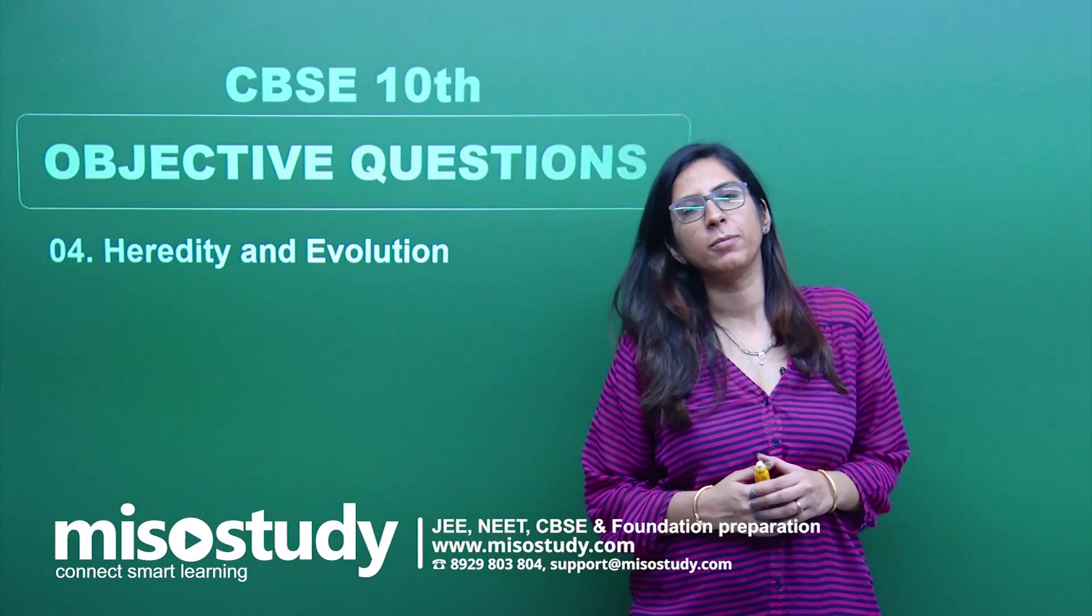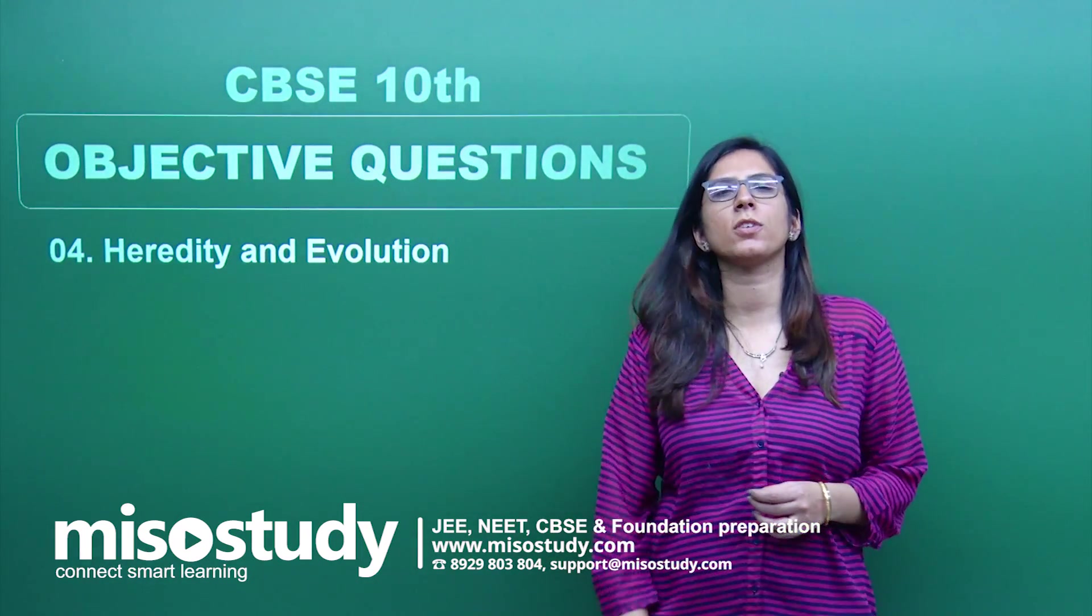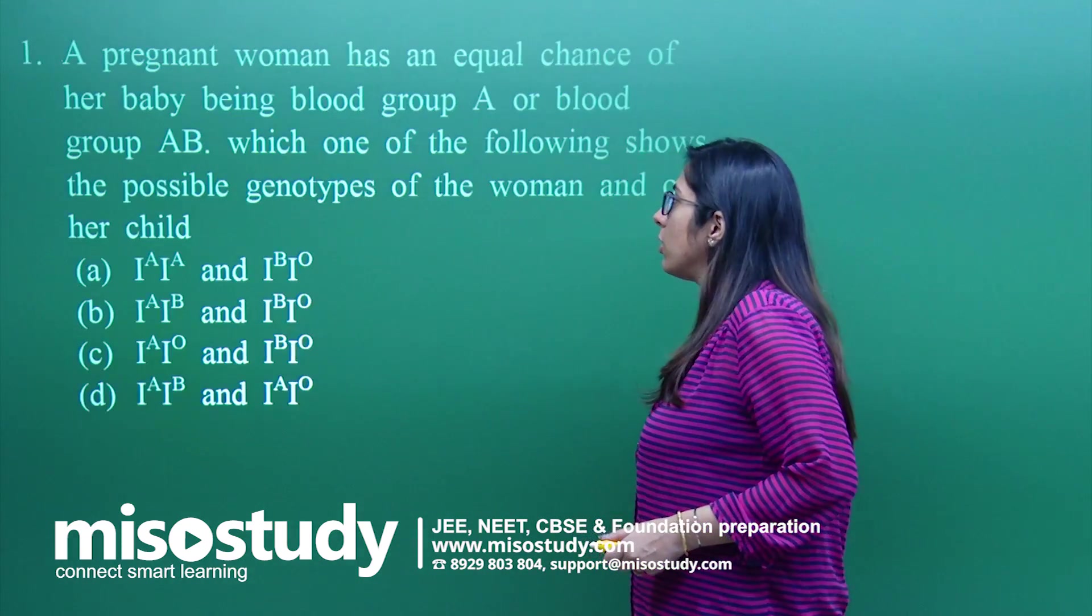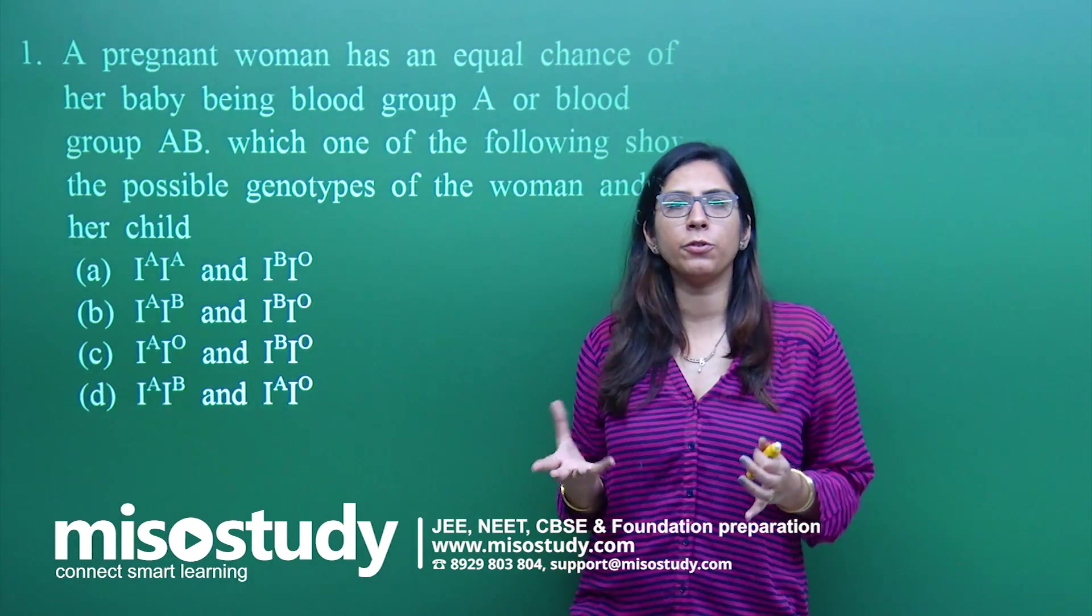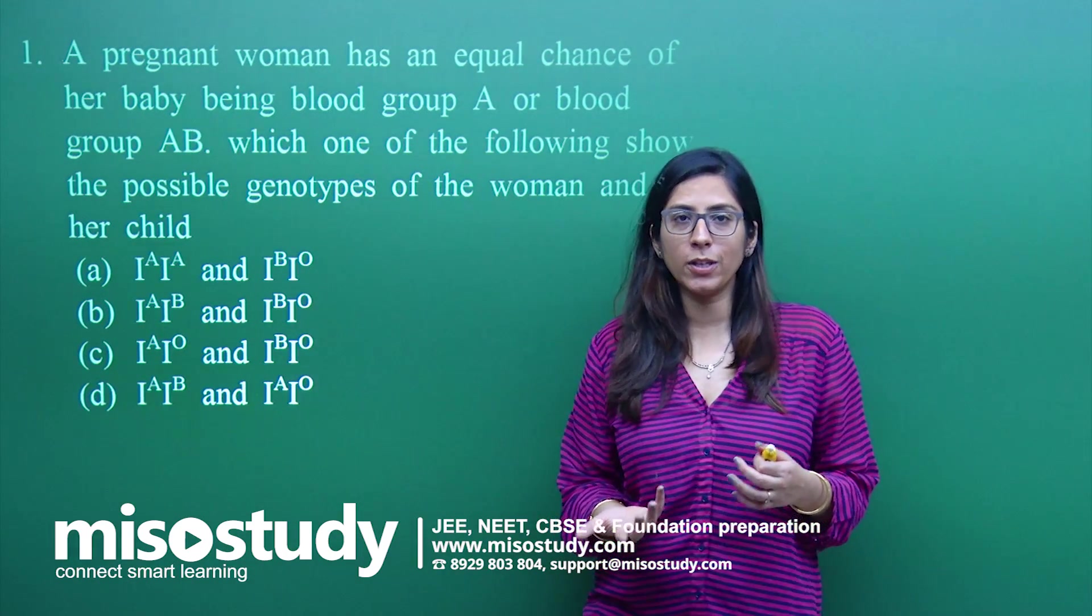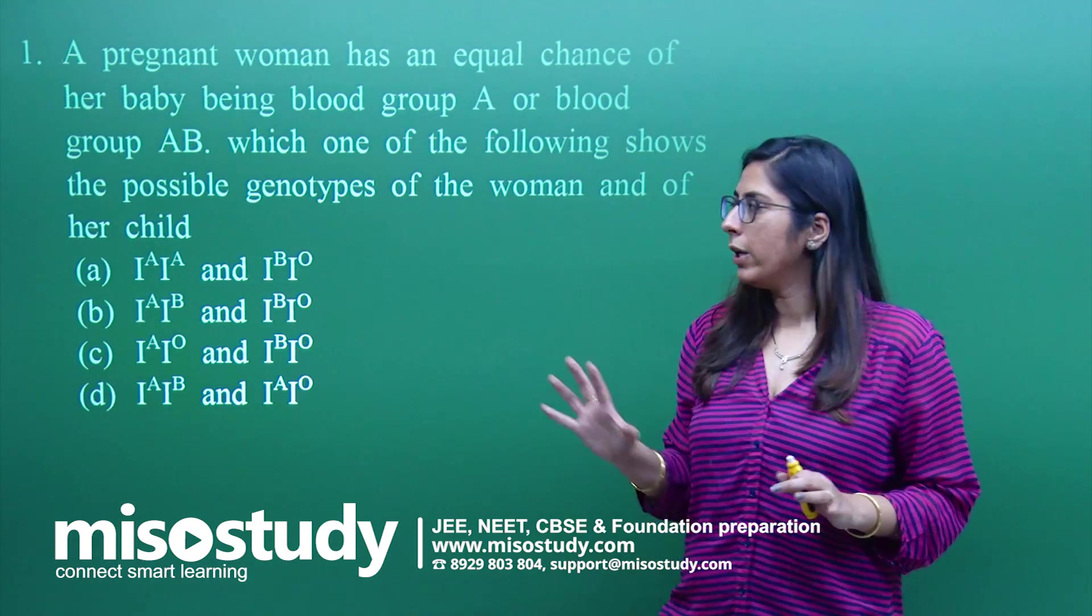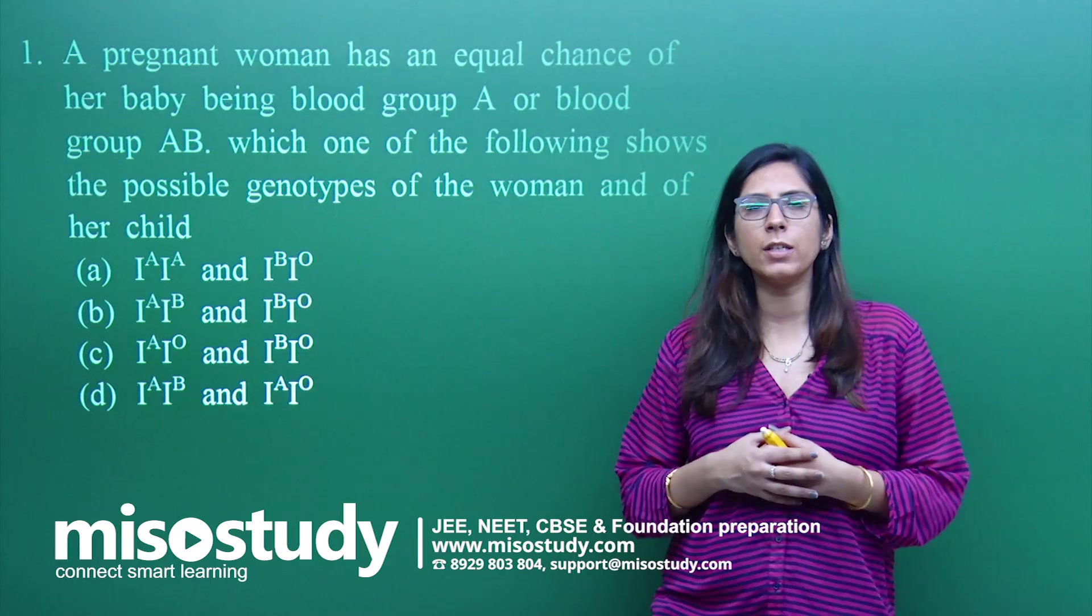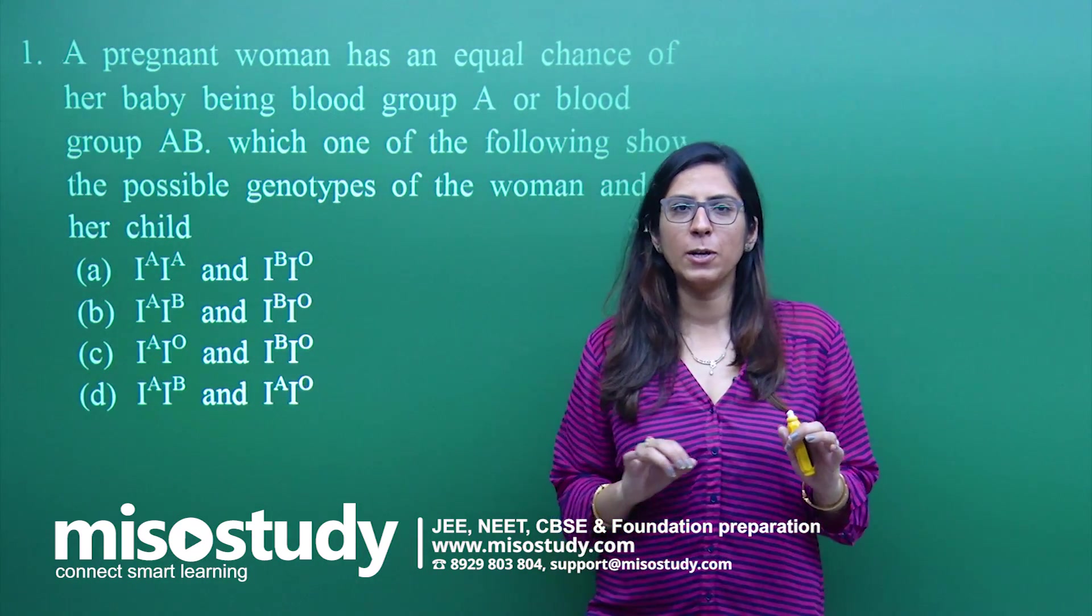Hello everybody, a very warm welcome. In today's class, we are talking about the chapter Heredity and Evolution. We'll be discussing objective questions from this chapter. This chapter is all about certain crosses in which sometimes you know the genotype of parents, sometimes you know the genotype of the offspring, and depending upon that you have to find the other one.